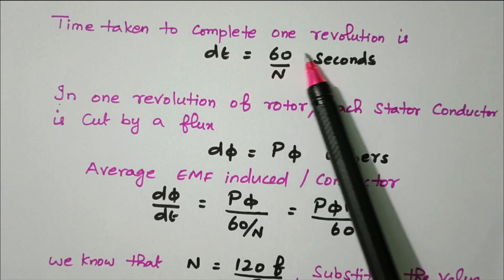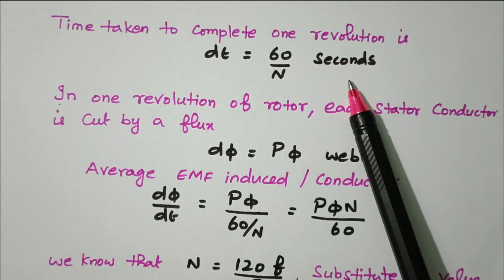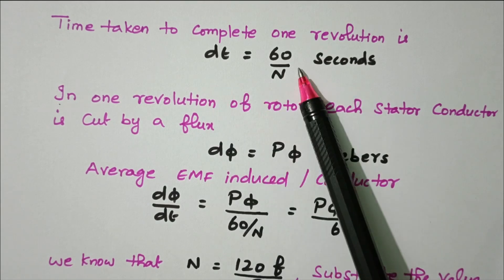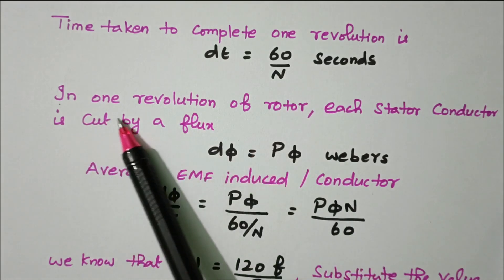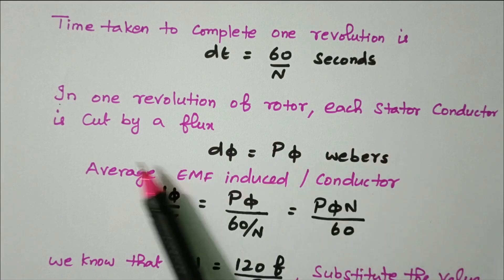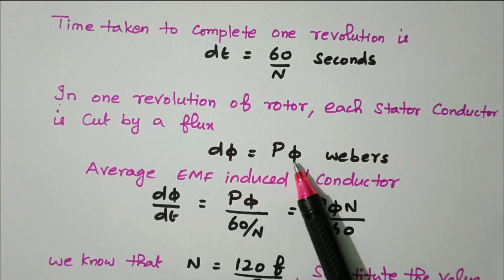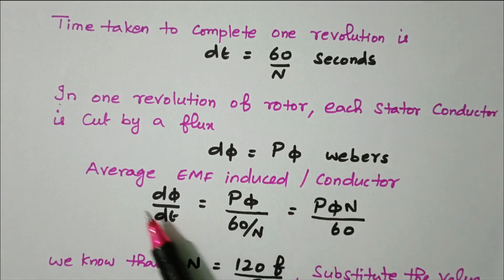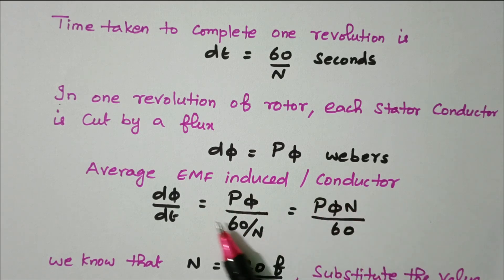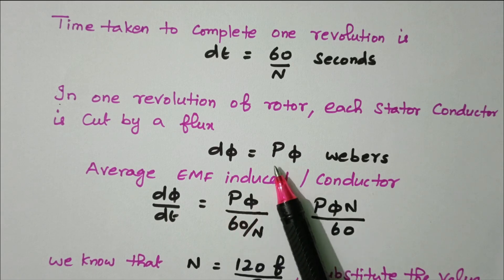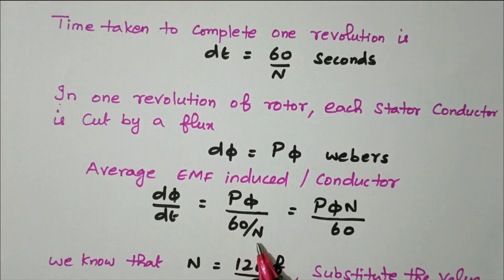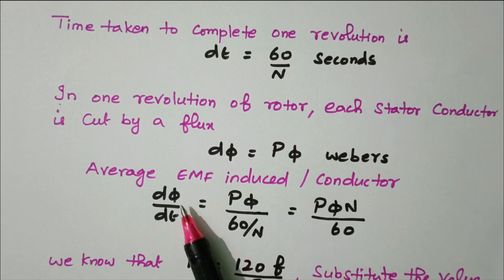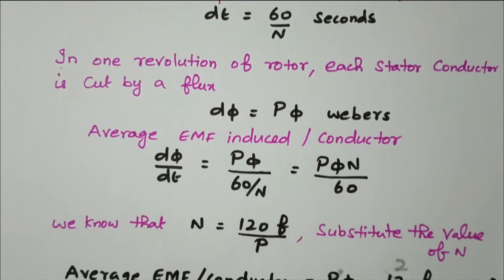Time taken to complete one revolution is dt = 60/N seconds. In one revolution of the rotor, each stator conductor is cut by a flux dΦ = P × Φ — that is, the flux cut is the number of poles multiplied by the total flux. Therefore, the average EMF induced per conductor is dΦ/dt = (P × Φ) / (60/N), which gives P·Φ·N / 60.